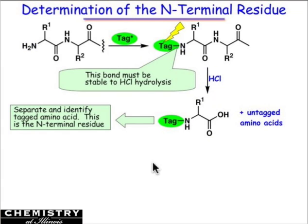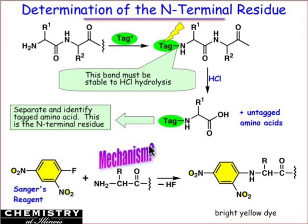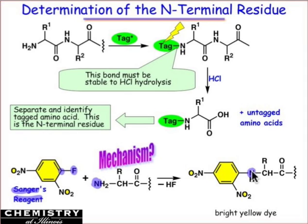Back in Sanger's day, the tag chemistry involved using a dye molecule that absorbed at a particular wavelength — a yellow-colored dye absorbing around 400 nanometers — using the dinitrofluorobenzene group, now known as Sanger's reagent. This takes advantage of nucleophilic aromatic substitution, where the amino group reacts with the carbon carrying the fluorine, substituting fluorine for nitrogen.